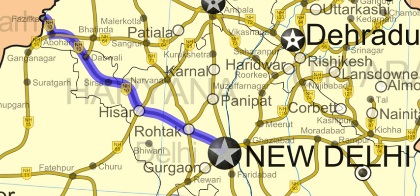The project was started in 2015 and is progressing at a good pace, and is expected to be completed on time. It also covers one railway over bridge, ten flyovers, one major bridge, eleven minor bridges, and a Sursa bypass.